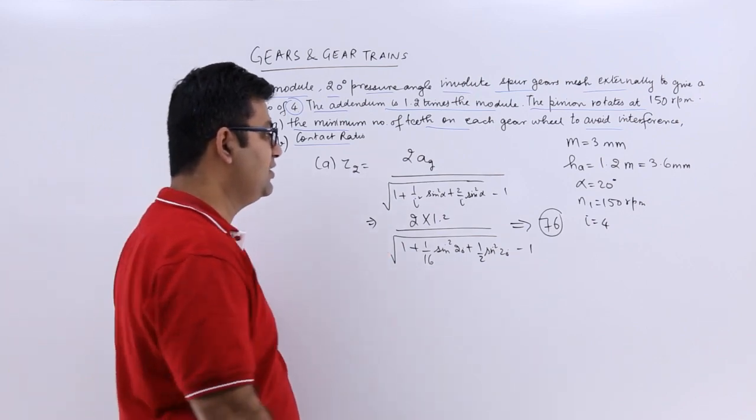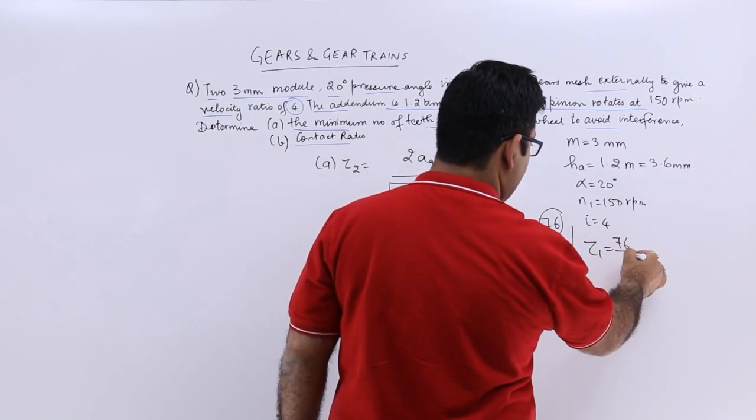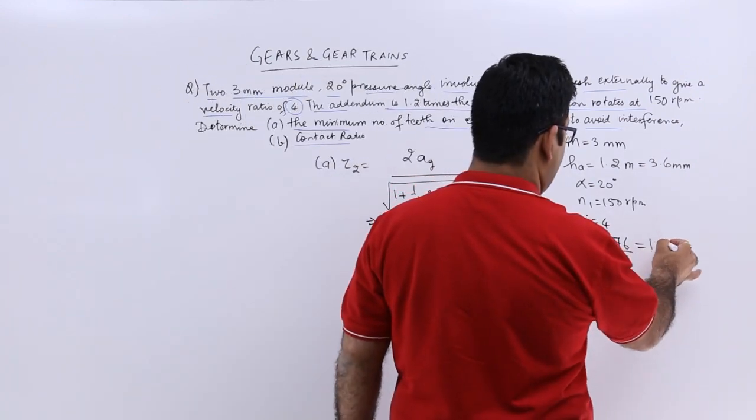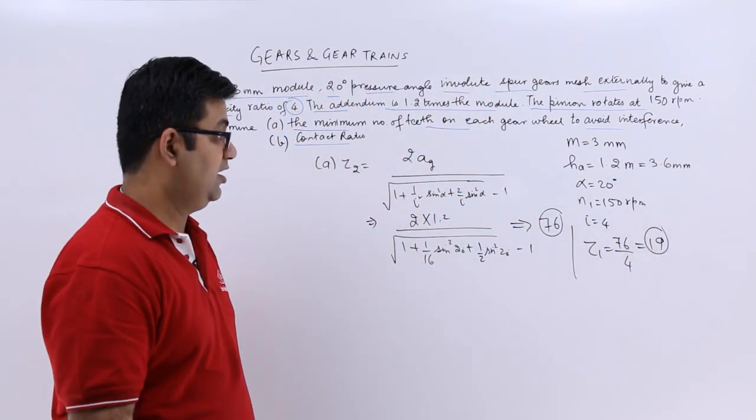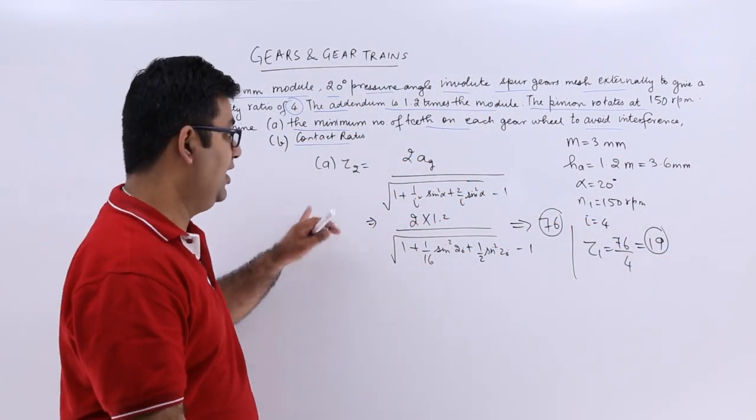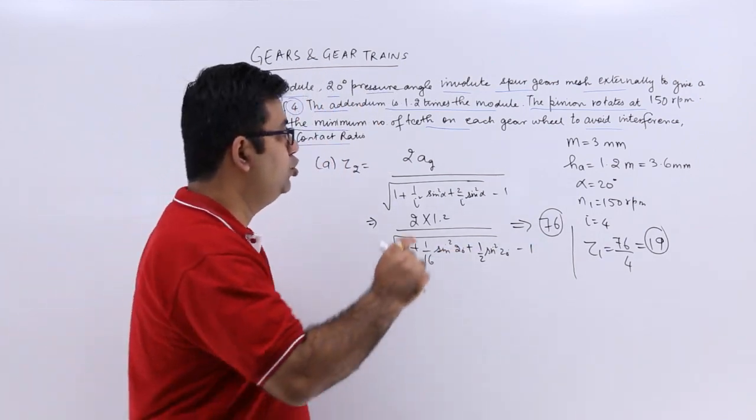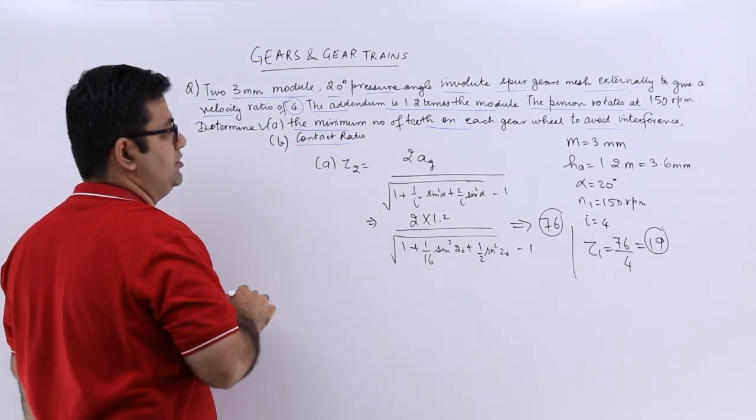With z2 76, the value of z1 would be 76 by 4, that's the velocity ratio and this will be 19. So your pinion has 19 teeth on the minimum side and your gear has a minimum of 76 teeth to avoid interference. This takes care of the first part of the question.